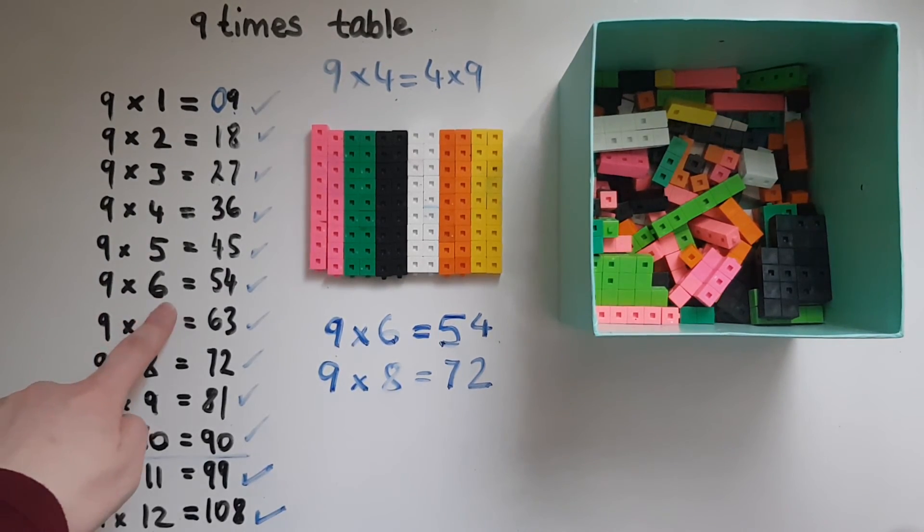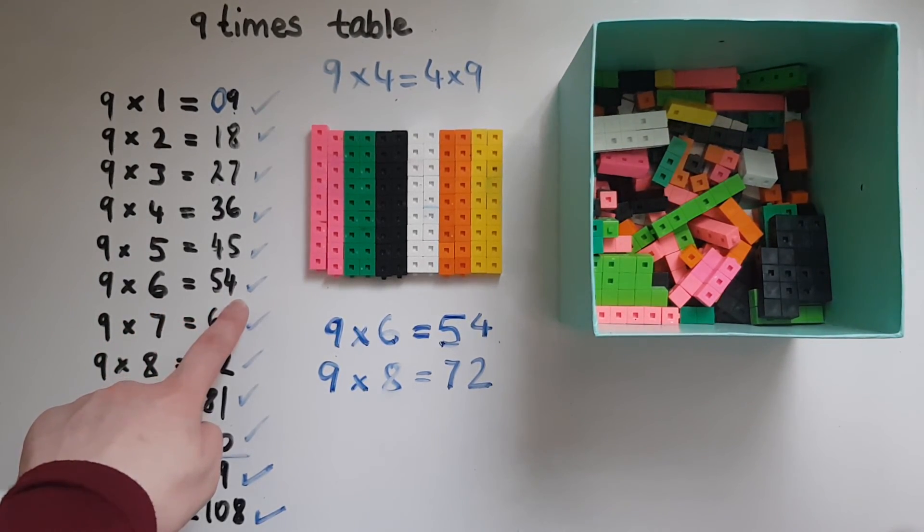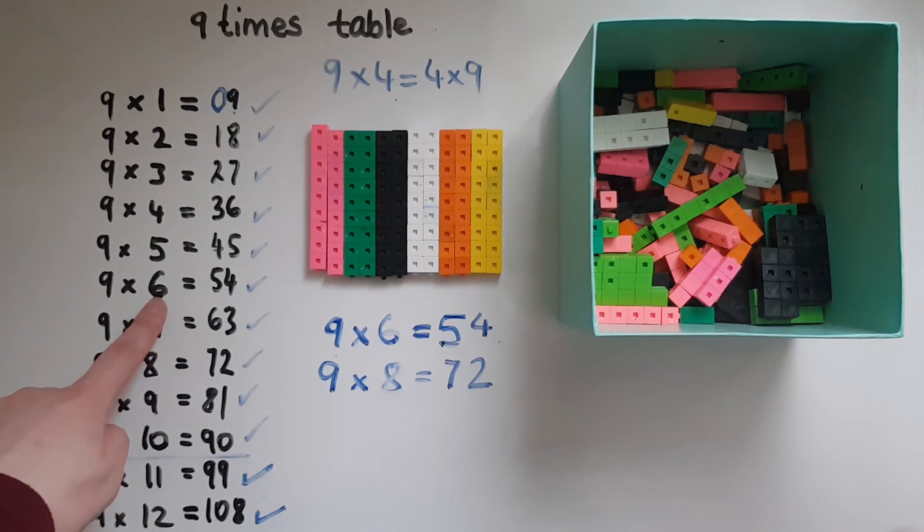So 9 times 6, for example, gives us 54. When you look at the 6 times table, you'd have 6 times 9, which is probably harder to work out. So you can do instead 9 times 6, or 9 times 8 instead of 8 times 9. What I suggest you do now is write these on a piece of paper, repeat them again and again, and use the tricks to work the answers out.